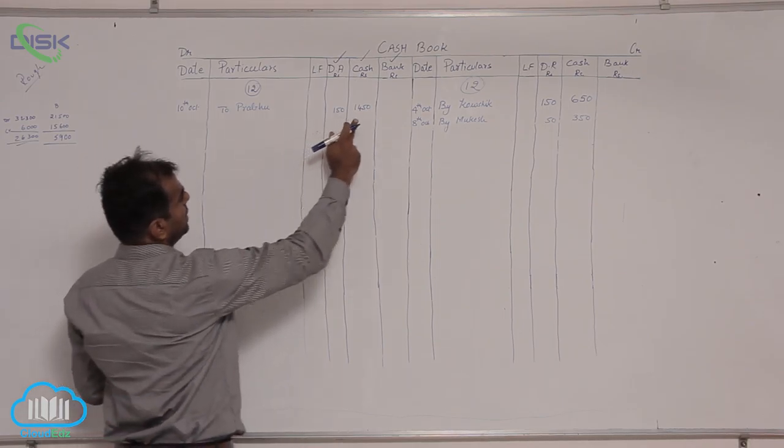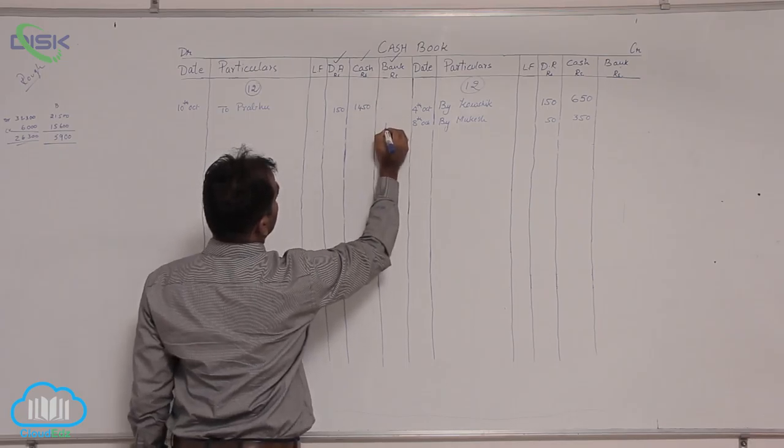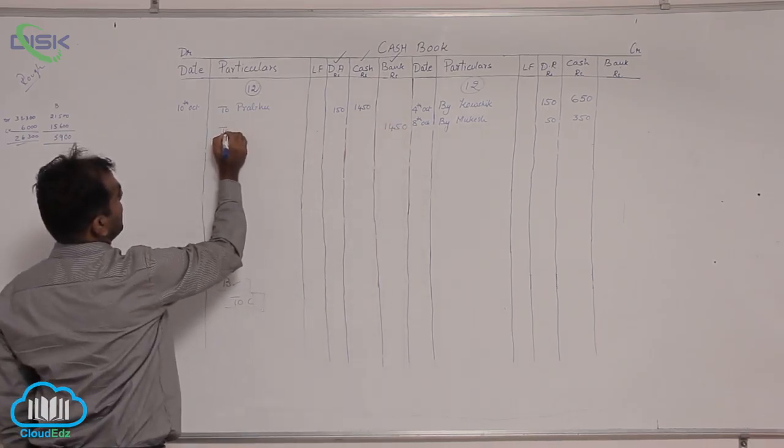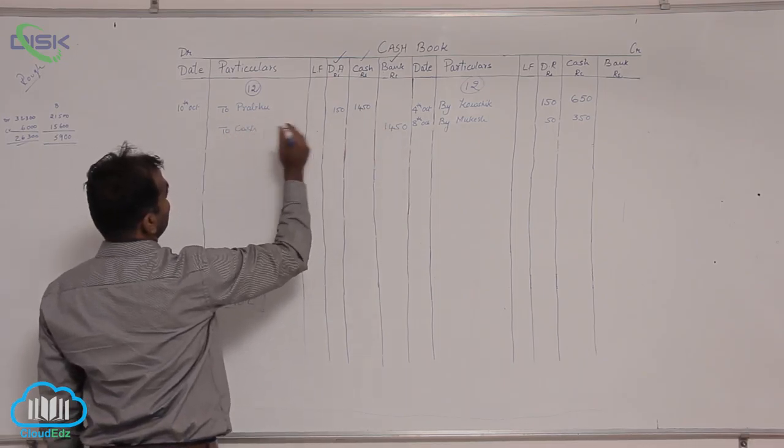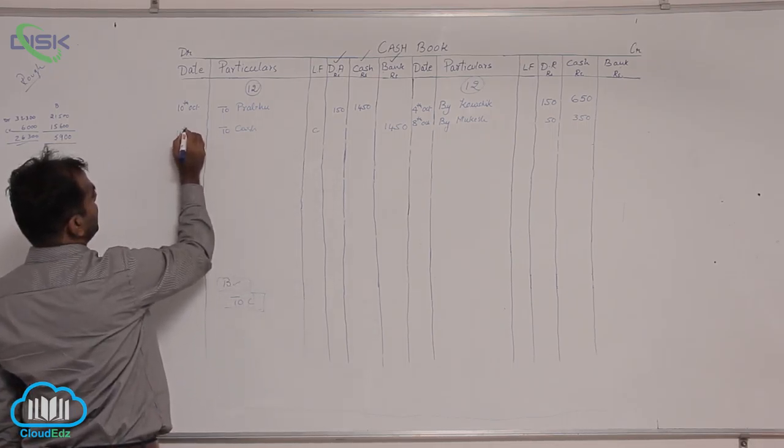Here bank has to be debited with this 1450, so this is the debit side, this is the bank column, so 1450 in the bank column, reason is cash I have to state and as you know when bank and cash are involved it is a contra entry, write C and the date 14th.